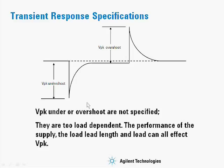There are other parts of the waveform that are not specified. Vpeak, undershoot, and overshoot are not specified, because there are too many variables that can cause these voltages to vary. The load lead length, the dressing of the leads whether they're twisted or not, and the load itself whether it's reactive can all affect Vpeak, overshoot, and undershoot. So you must be careful when attaching load leads to make them as short as possible and twist them together to minimize inductance.